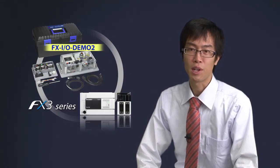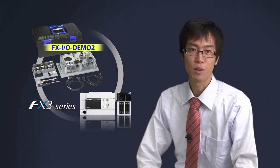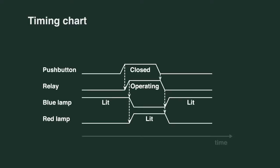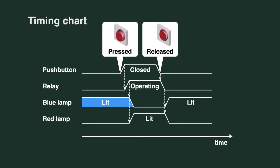For understanding the operation timing of devices, we also have timing chart representation. Devices are listed on the vertical axis, and the horizontal axis represents time.